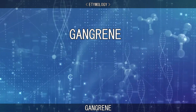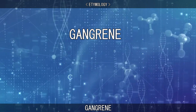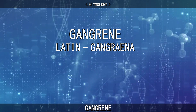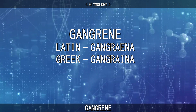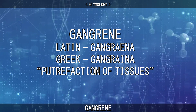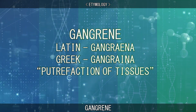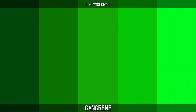The etymology of gangrene derives from the Latin word gangrena and from the Greek gangrena, which means putrefaction of tissues. It has no etymological connection with the colour green, despite the affected areas turning black, green, or yellowish-brown.